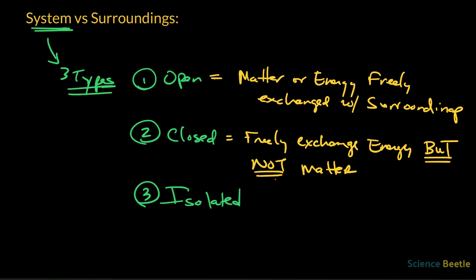And then lastly, the isolated system. The isolated system cannot exchange either one of these items. Cannot exchange energy nor matter because it's isolated. Because of that, you're not going to have any kind of exchange between any of the surroundings or with the system in either direction.